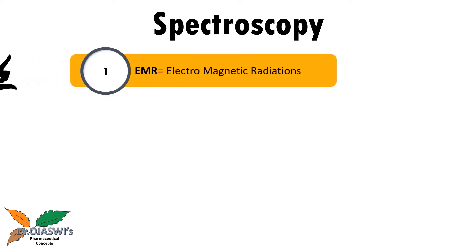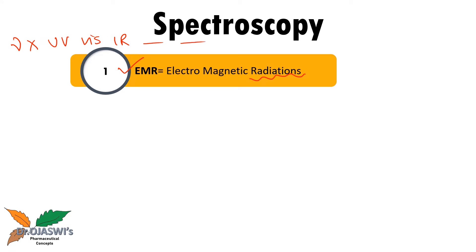In spectroscopy, we use electromagnetic radiations — this is quite a big topic in itself, but what we need to remember is that in spectroscopy we are using electromagnetic radiations. These radiations start from gamma rays, X-rays, then UV, visible, IR, microwaves, radio waves, and so on.